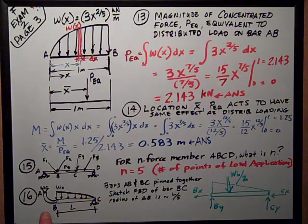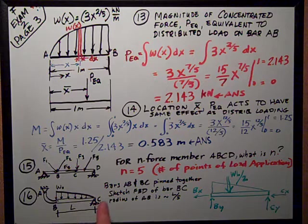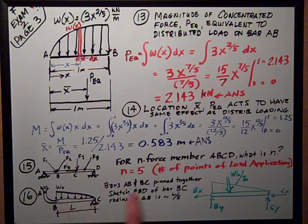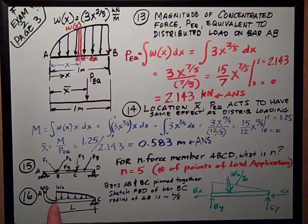Number 16 is an odd-shaped two bars pinned together, A, B, curving, and straight bar, B, C. They're pinned together at point B.